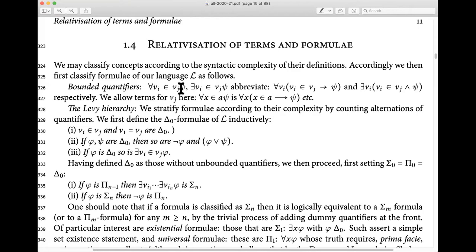This bounded quantifier notation is an abbreviation in our formal language: ∃vᵢ ∈ vⱼ ψ abbreviates ∃vᵢ (vᵢ ∈ vⱼ ∧ ψ), and ∀vᵢ ∈ vⱼ ψ abbreviates ∀vᵢ (vᵢ ∈ vⱼ → ψ). Note: we only allow variables for vⱼ here, not arbitrary terms — please cross out the erroneous line in the notes that says otherwise. The Δ₀ formulae are those built from atomics using ¬, ∨, and bounded quantifiers.